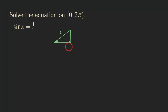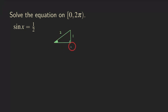We can figure out the remaining side using the Pythagorean theorem — take the square of 2, subtract the square of 1, and take the square root of that result. Since we can memorize this right triangle, we know the adjacent side is √3, making this a 30-60-90 degree right triangle.